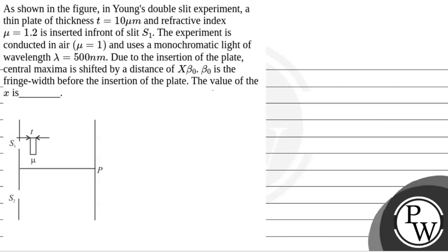Let's see the question. The question will be given a key. As shown in the figure, in Young's double slit experiment, a thin plate of thickness t equals 10 micrometer and refractive index mu equals 1.2 is inserted in front of slit S1. The experiment is conducted in air where mu equals 1 and uses monochromatic light of lambda equals 500 nm.